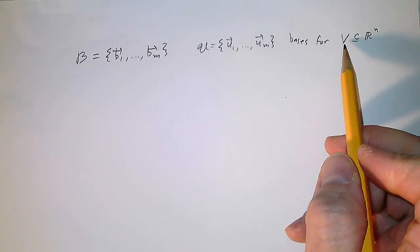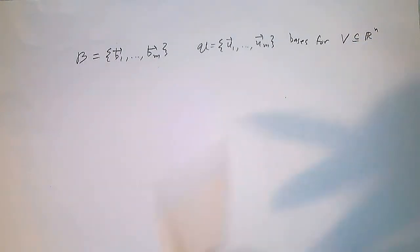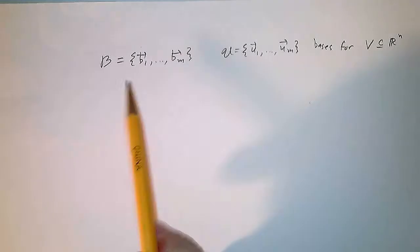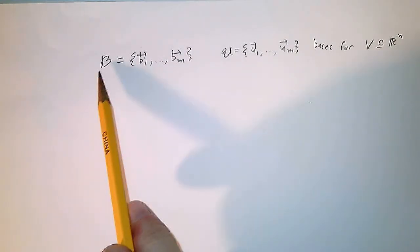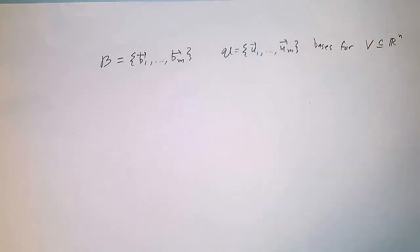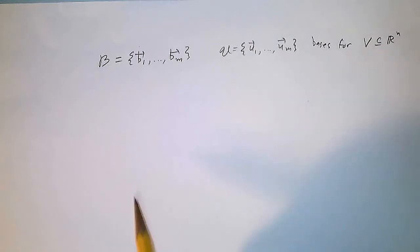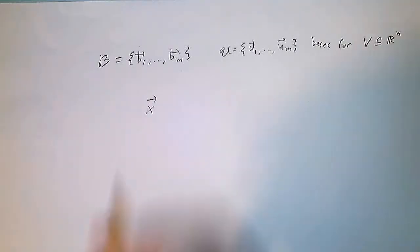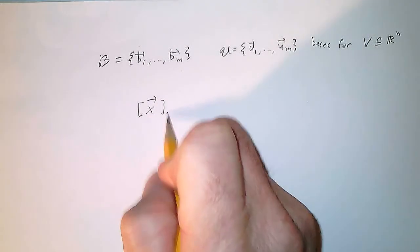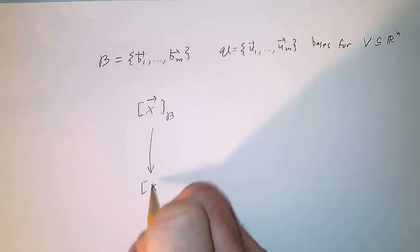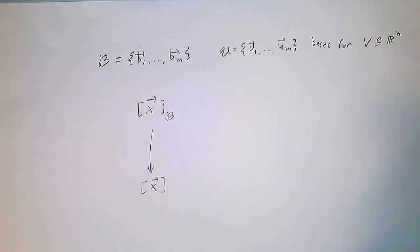Notice that M and N are different here, so V might have dimension smaller than N — it could be all of Rⁿ, but it doesn't have to be. The question is: if I know the coordinates of a vector with respect to basis B, is there a way to change it into the coordinates with respect to U? And being linear algebra, the answer is yes — there's always a matrix to do that kind of thing.